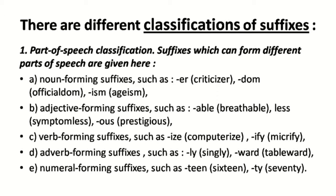Suffixes which can form different parts of speech include: noun-forming suffixes such as '-er', '-dom', '-ism' — for example, 'criticiser', 'officialdom'; adjective-forming suffixes such as '-able', '-less', '-ous' — for example, 'breathable', 'symptomless'; verb-forming suffixes such as '-ize', '-ify' — for example, 'computerize'; adverb-forming suffixes such as '-ly', '-ward' — for example, 'singly', 'tableward'; and numeral-forming suffixes such as '-teen' and '-ty'.